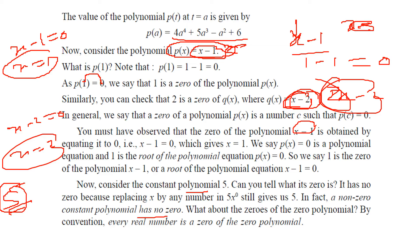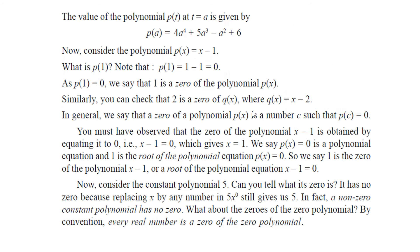How about the zeros of a zero polynomial? Every real number is a zero of the zero polynomial. A zero polynomial means 0. So you put any value, every real number is a zero of the zero polynomial.